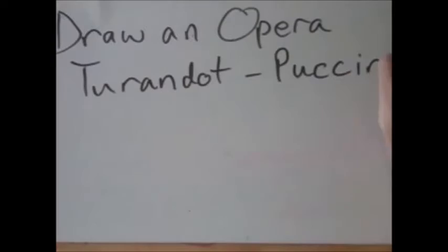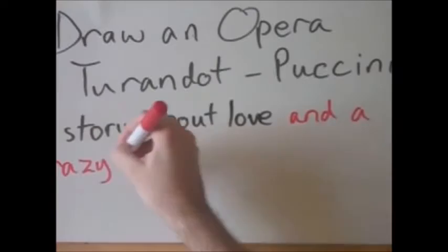Hello and welcome to Draw an Opera. This episode is about Turandot by Puccini. It's a story about love and a crazy cold-hearted Chinese princess who despises men and has a penchant for decapitation.